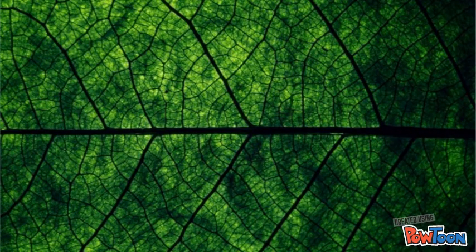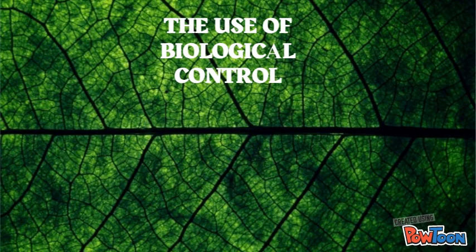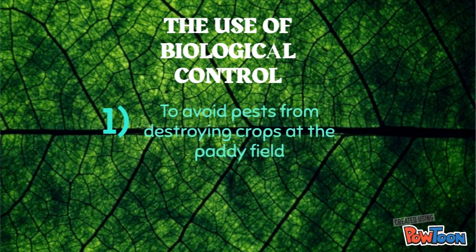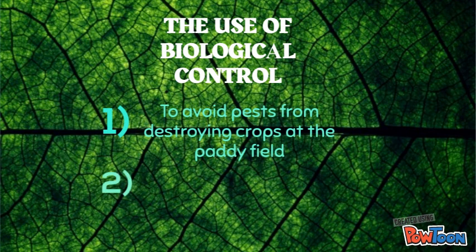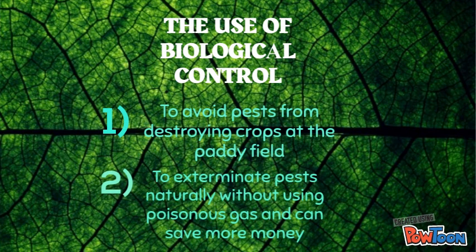The use of biological control: to avoid pests from destroying crops at the paddy field, and to exterminate pests naturally without using poisonous gas, which can also save more money.